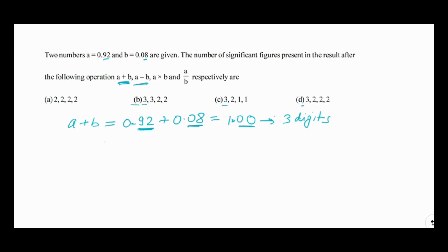Now let us proceed to A minus B. The same rule applies for subtraction. 0.92 minus 0.08 gives 0.84. There are two digits after the decimal in this number, so the result will be represented in two significant digits.